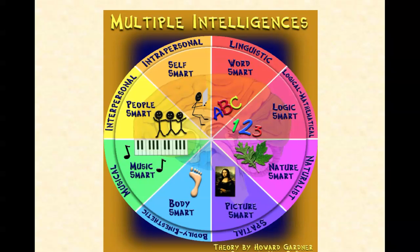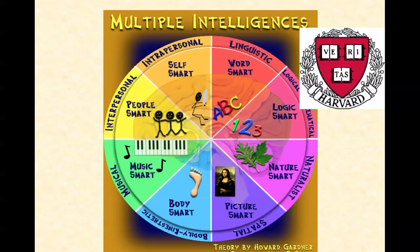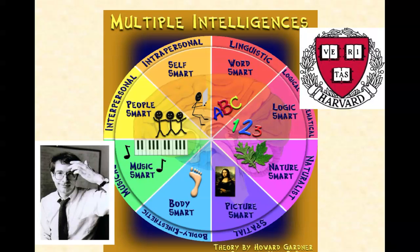So multiple intelligences — there are eight of them altogether. First, I'd like to tell you about Harvard University. This is their educational logo, and that is Latin standing for truth, kindness, and beauty. This guy right here, Howard Gardner, was a professor at Harvard and he's the one that came up with the theory of multiple intelligences.